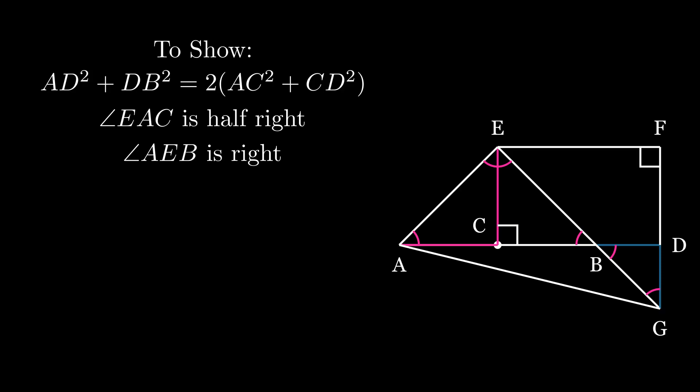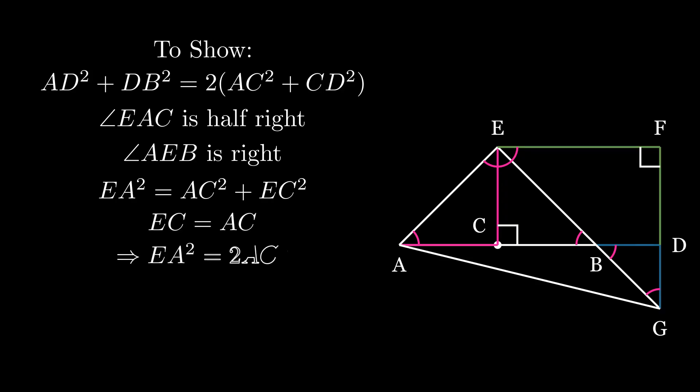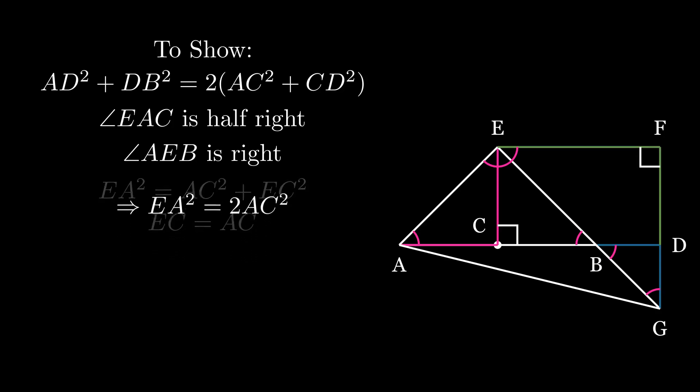Since angle EGF is half of a right angle and angle EFG is a right angle, we know that angle GEF is half of a right angle. Triangle EGF is an isosceles triangle, and so EF is equal to FG. We are now ready to use the Pythagorean theorem. Looking at triangle EAC, we see that EA squared is equal to AC squared plus EC squared. EC being equal to AC, EA squared is therefore equal to twice AC squared.